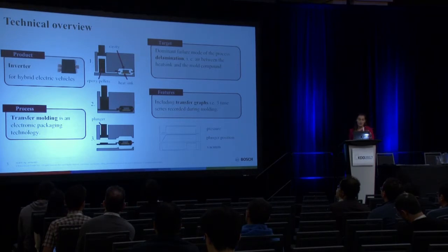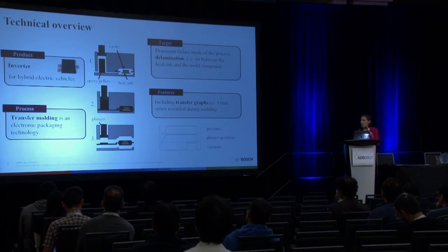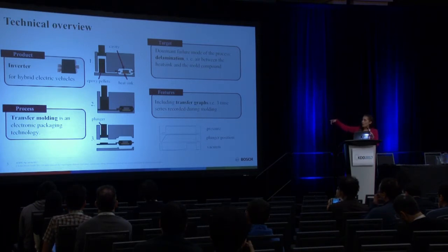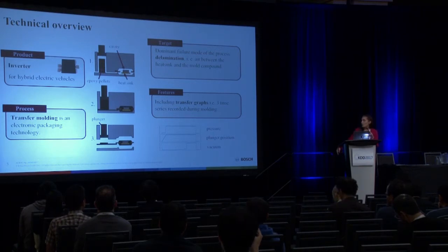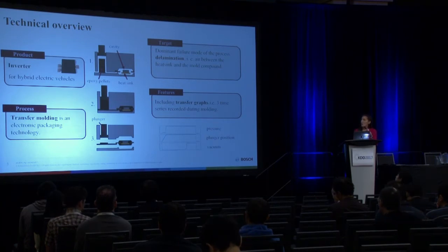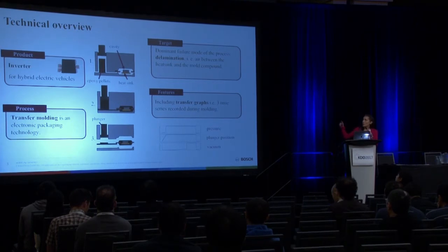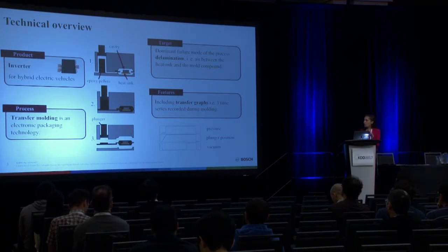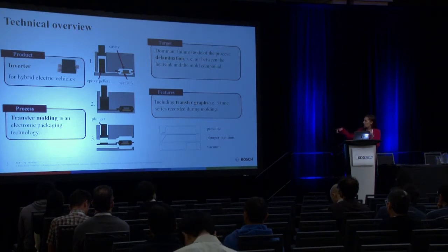The product focused on is an inverter for electric cars produced by Bosch in Hungary and Germany, packaged using a process called transfer molding. Epoxy pellets are fed into the molding tool, melted, and pressed into the cavity under high pressure, then the epoxy is cured in vacuum. The dominant failure mode is called delamination — air entrapments between the heat sink and the epoxy compound. The most important data used were transfer graphs: three time series recorded for each individual part — pressure, position of the plunger, and vacuum.